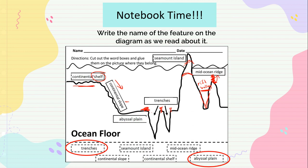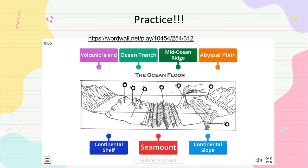Remember the word continental — it comes three times. If the land goes up a little and then down, we call it a continental rise. Please practice these words on the word wall; you will find the link in LMS.